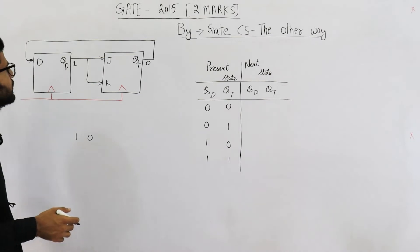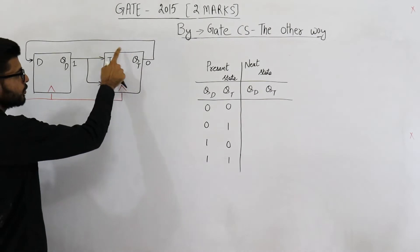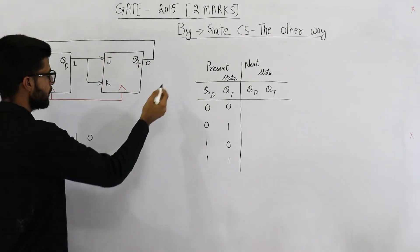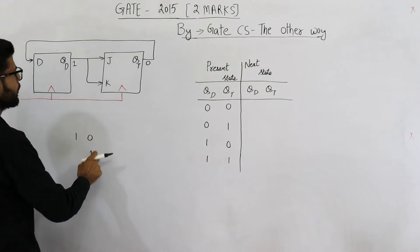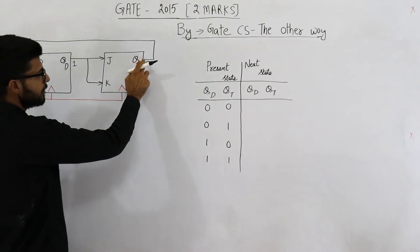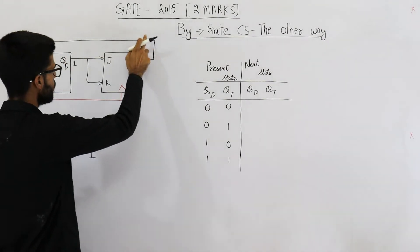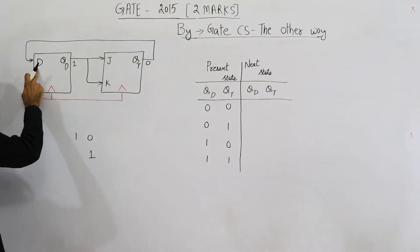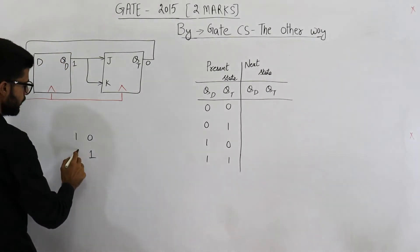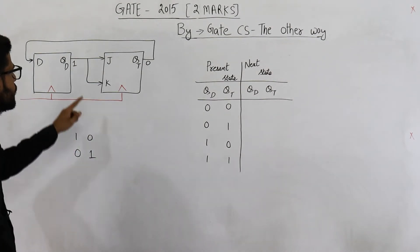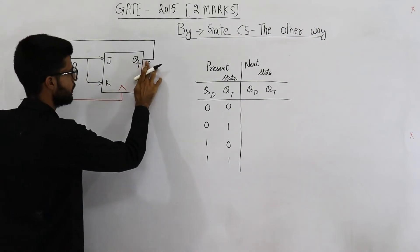Now let us see what will be the next state. T input, or both J and K, are currently 1. That means we have to toggle the output — this 0 will become 1. And for the D flip-flop, the D input was 0 before giving a clock, so 0 will shift to the output. So the current state QD=1, QT=0 transitions to QD=0, QT=1.